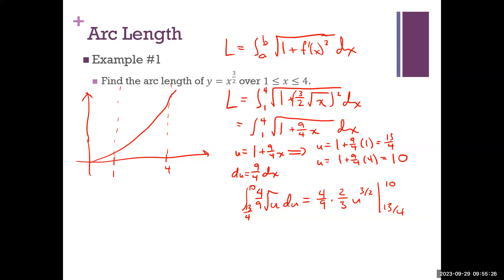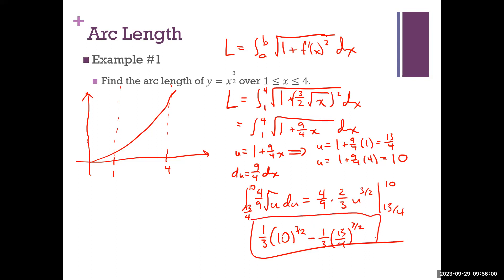This all comes down to a third times 10 to the three-halves minus a third times (13/4) to the three-halves. If you want to approximate that you can, but it doesn't come out particularly friendly. All right, I'll go ahead and stop there. Have a good weekend — I'll see y'all Monday.